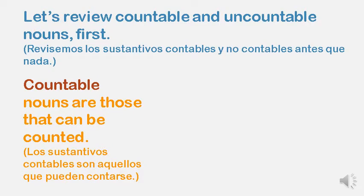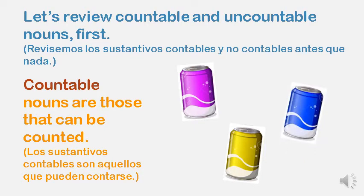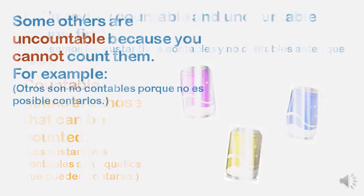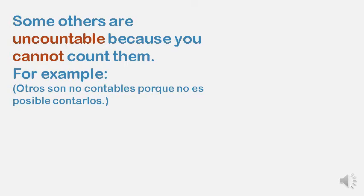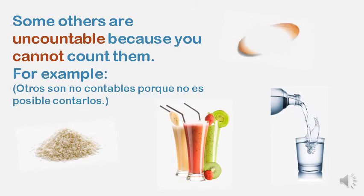Let's review countable and uncountable nouns first. Countable nouns are those that can be counted: one can, two cans, three cans. Some others are uncountable because you cannot count them — for example, rice, juice, water, bread.